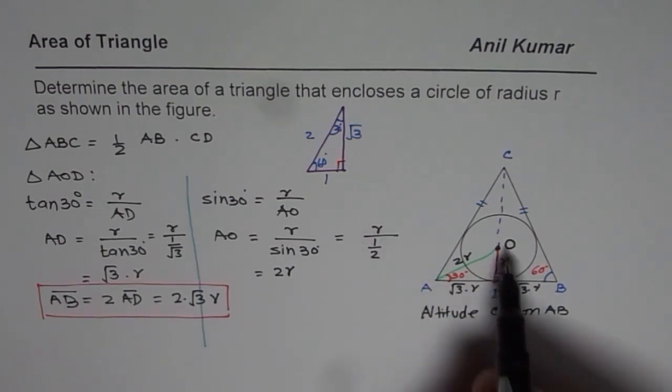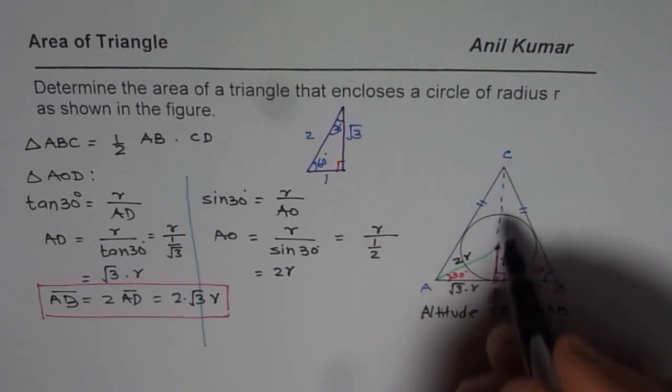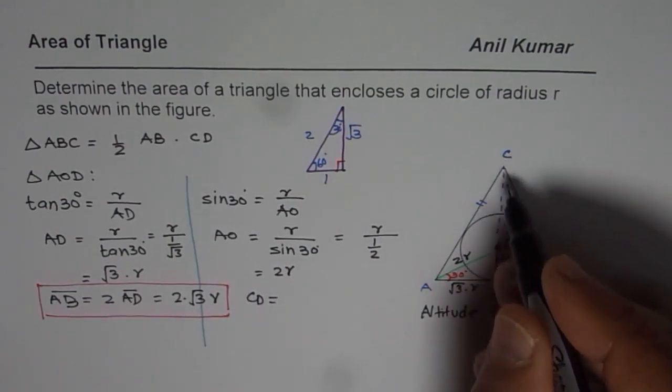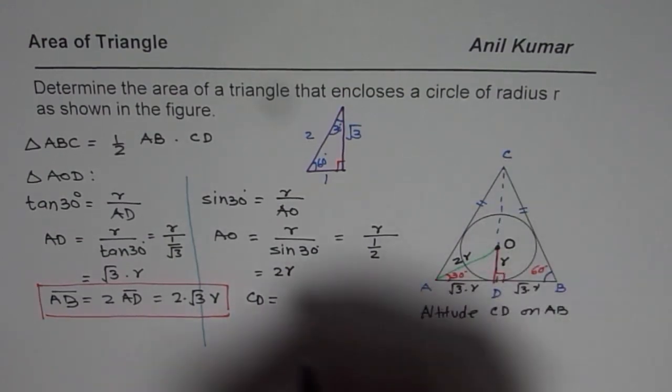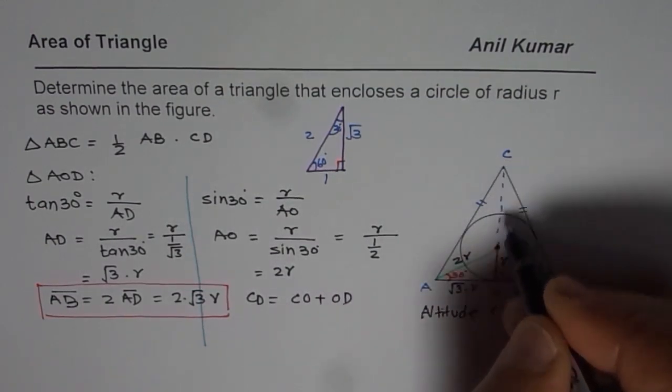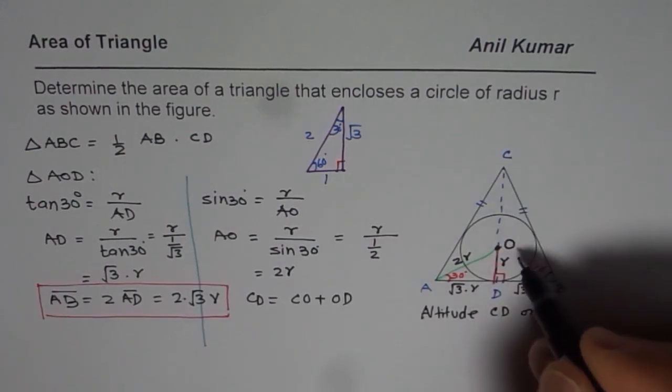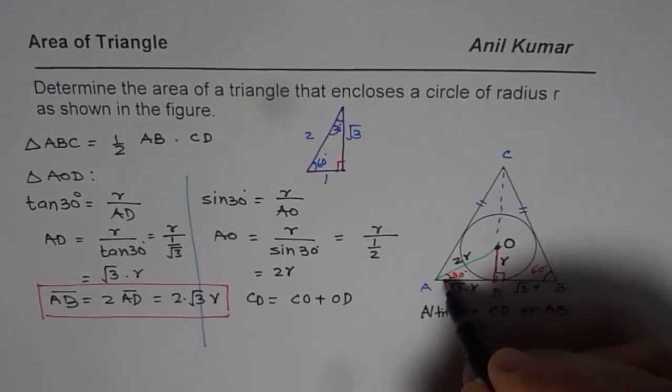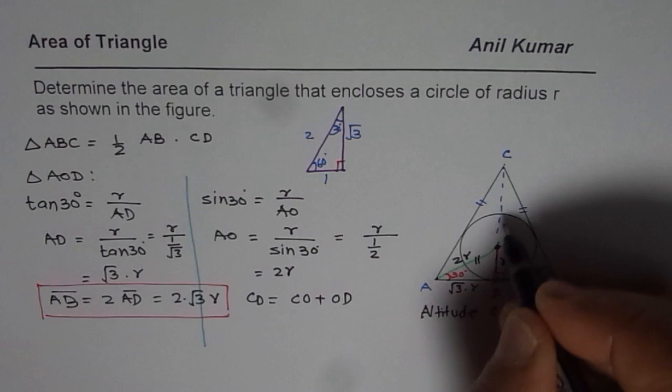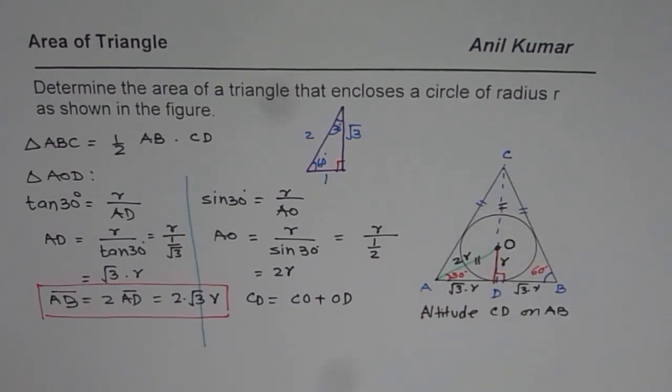Now second part is the height. So the height is CD. So we say CD is equals to CO plus OD. So C to O. Now C to O should also be equals to 2R, since this A to O is CO. Now these two sides are equal. It does not look like but it is really equal.